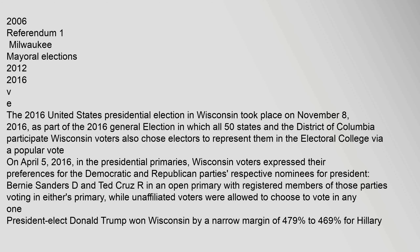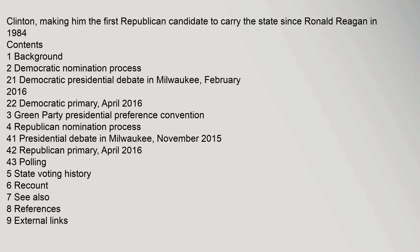Wisconsin voters expressed their preferences for the Democratic and Republican Party's respective nominees for president. Bernie Sanders and Ted Cruz ran in an open primary with registered members of those parties voting, while unaffiliated voters were allowed to choose to vote in any one primary. Donald Trump won Wisconsin by a narrow margin of 47.9% to 46.9% for Hillary Clinton, making him the first Republican candidate to carry the state since Ronald Reagan in 1984.